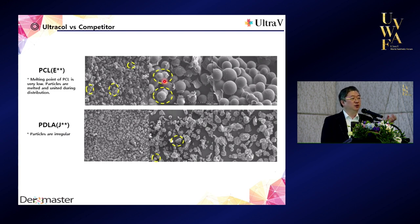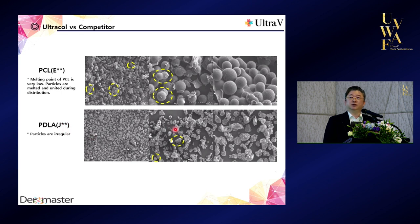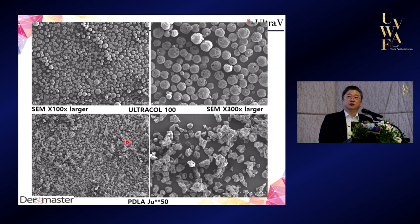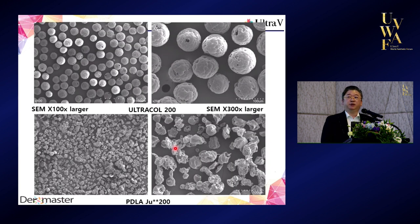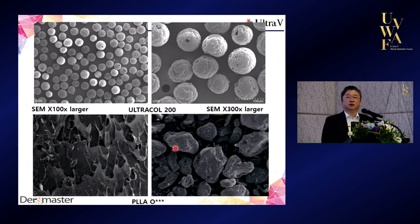The shape and size also contribute to granuloma formation. There's another Korean product called PD-LLA or PD-LA, and they also have very irregular shapes. Please take a look at the shapes — you can feel the quality difference. This is also a comparison between our PDO and the PD-LLA in microscopic pictures, showing very irregular patterns. Another copy came out in Korea — PLA — and their shape is also not in a good, regular pattern.